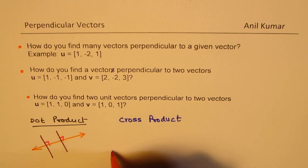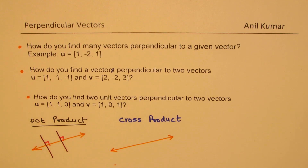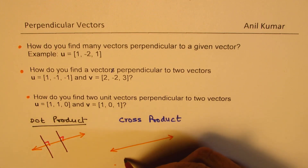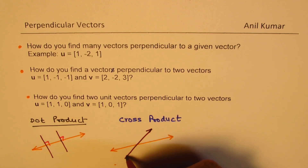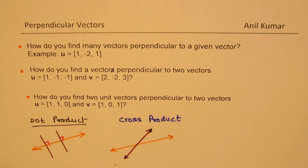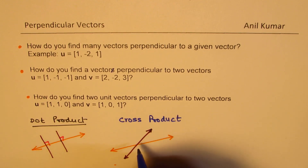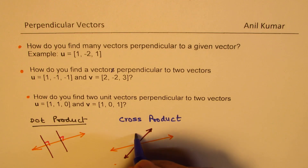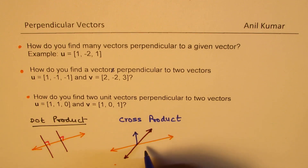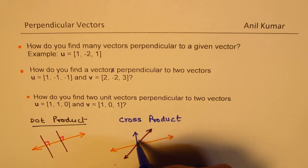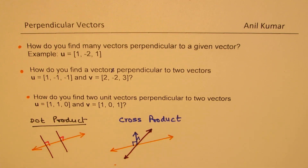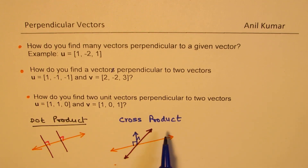If I have a vector — let us say this is one of the vectors, which we may call u, the other vector being v — in that case, the cross product of u and v will be a vector pointing upwards, and it will be perpendicular to both. So that is how we are going to find the perpendicular vector.